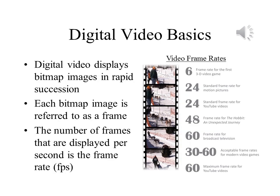We have known for over a century that the eye can process and perceive motion with as few as 13 images per second. The movie industry has traditionally used 24 frames per second, and for this reason YouTube videos typically use 24 frames per second. The human eye can detect the difference between 24 and 60 frames per second, and this higher value makes movement look more fluid.